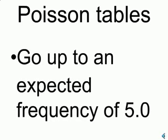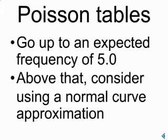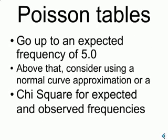Now, the Poisson tables go up to an expected frequency of about 5.0. Above that, you have to use some other technique. I would say that you might get by with using the normal curve as an approximation. The chi-square is another very good alternative for expected and observed frequencies comparison.